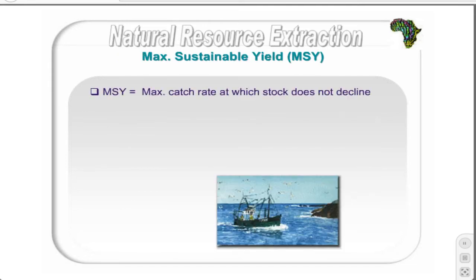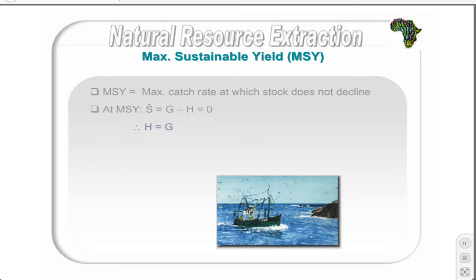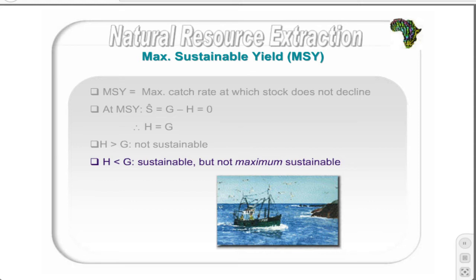The maximum sustainable yield, MSY, is the highest catch rate which ensures that the stock size does not decline. Thus, the MSY is the maximum possible catch rate at which there is zero actual growth in the size of the resource, meaning the harvest rate must equal the natural growth rate. If the catch rate exceeds the natural growth rate, the actual growth rate is negative and the population will decline towards extinction — such a catch rate is unsustainable. If the catch rate is below the natural growth rate, the actual growth rate is positive and the population increases, though this is clearly not the MSY.